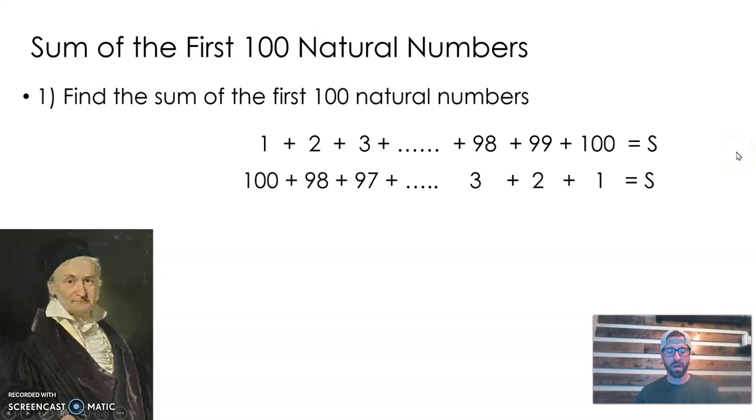Little third grade Gauss said, well, if I write out my first 100 numbers like this, leaving out all these in the middle, we know how the pattern goes. That's equal to the sum we want. But if I write the same sum right below it in reverse order and add straight down, look what happens.